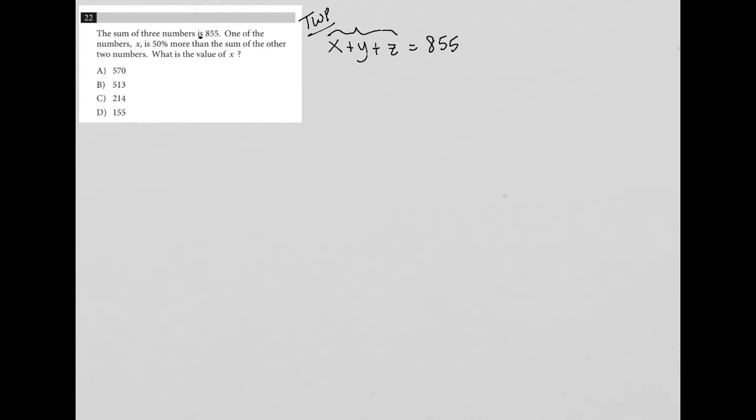The next sentence says one of the numbers, x, is 50% more than the sum of the other two numbers. So x equals 50% more than the other two numbers, which is y plus z.